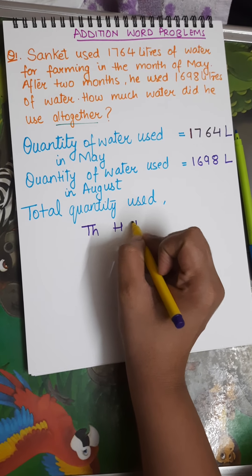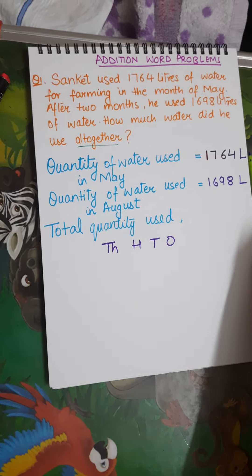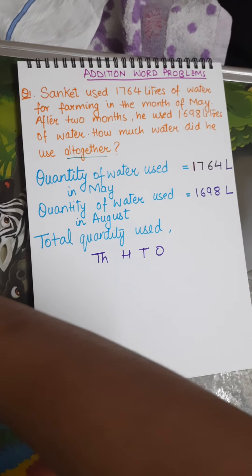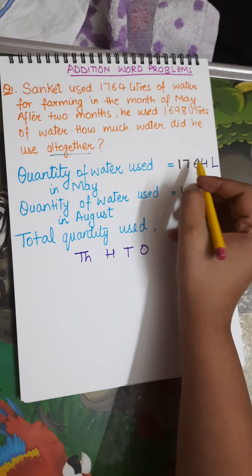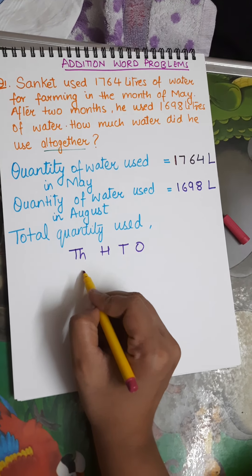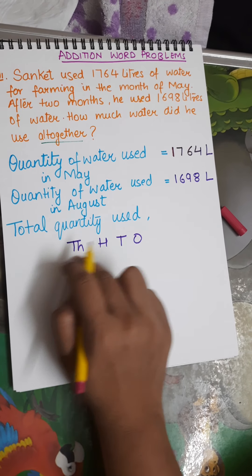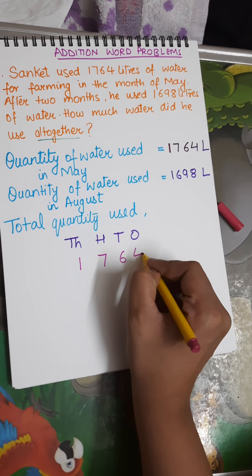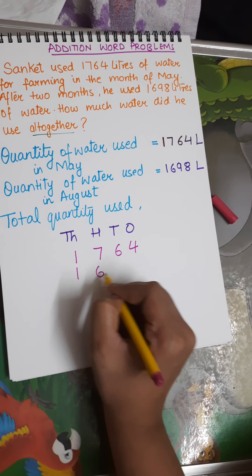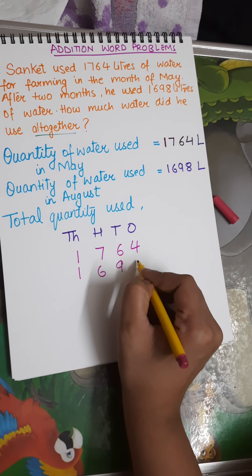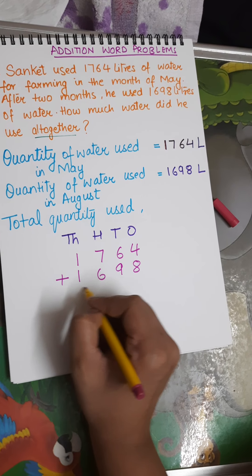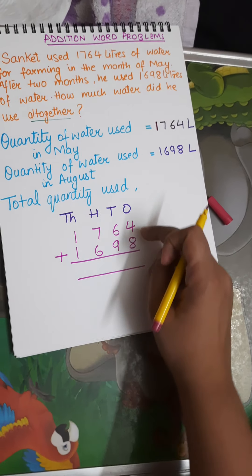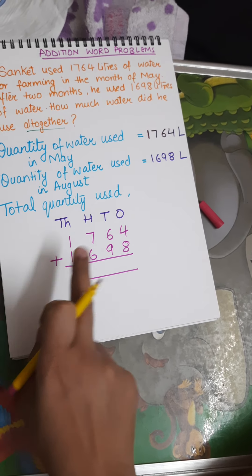Now I will set up the calculation. I write down the numbers, leave one column, leave one row, write down my numbers, put the addition sign and the bars, and now I add. I am leaving this addition for you to solve.